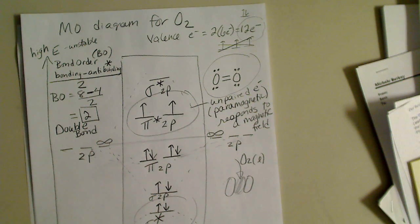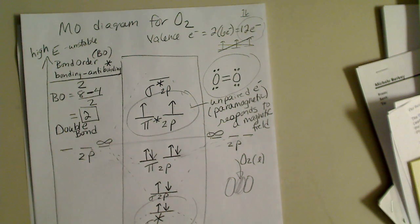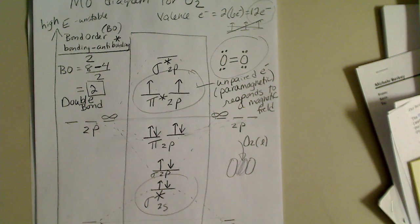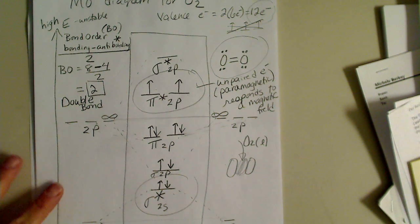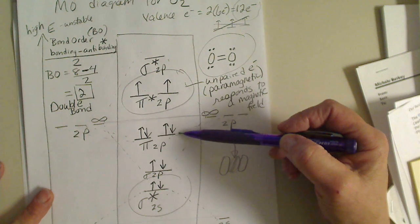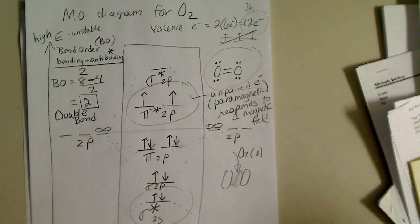For general chemistry, the complexity of the MO diagram stops here. There are different s and p interactions depending on where atoms are on the periodic table and their electronegativity values, so you may see the orbital ordering vary, but this simplest case is what general chemistry covers.